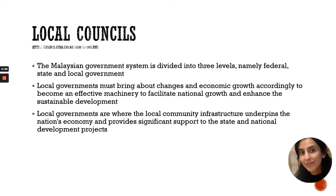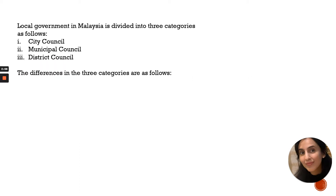Local governments are where local community infrastructure underpins the nation's economy and provides significant support to state and national development projects. Local government in Malaysia is divided into three categories: City Council, Municipal Council, and District Council.